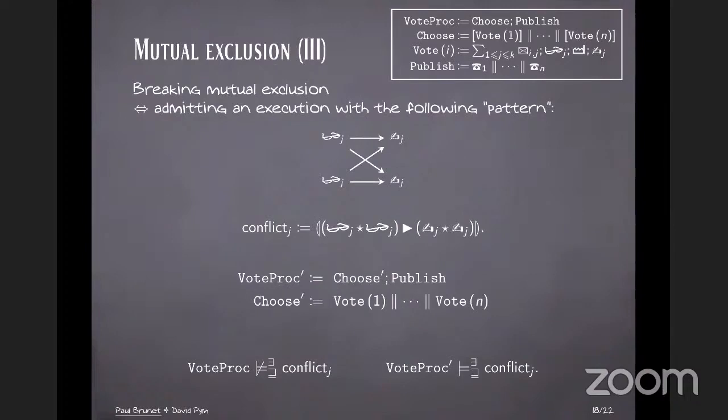So just to conclude this talk briefly with the example. So now we can express mutual exclusion. So breaking mutual exclusion corresponds to satisfying this formula, meaning that there is a sub-Pomset in one of the executions, such that we have in parallel two readings occurring, before two writings occurring on the same counter. And the voting protocol does not satisfy this formula, meaning it does not break mutual exclusion. But if we lose the boxes, we lose the voting booth around each voter, then mutual exclusion is broken.